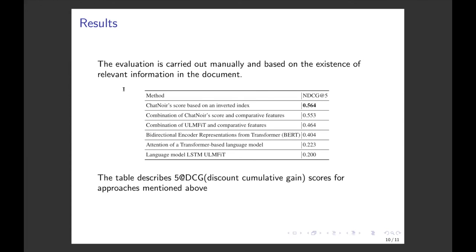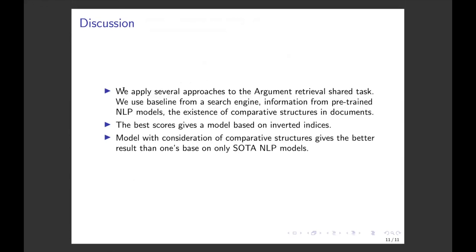The discussion and results of our work are the following. We applied several methods to the argument retrieval shared task. We used baseline, we used different state-of-the-art pre-trained language models, and we considered the existence of comparative structure in the document. The best score gives the baseline, and the model with consideration of comparative structure gives a better result than ones based on SOTA NLP models.